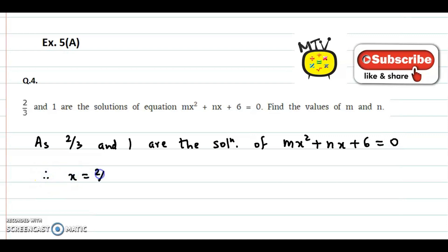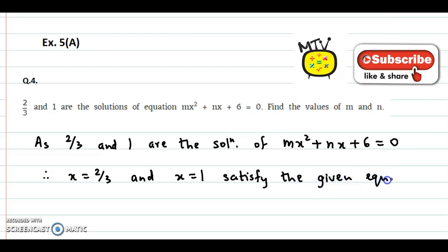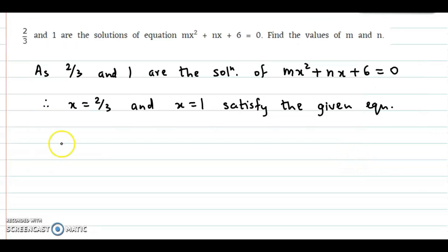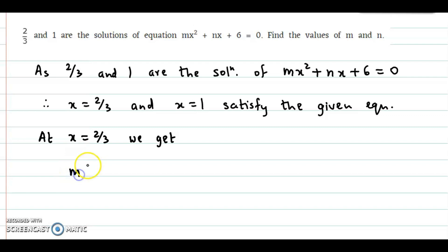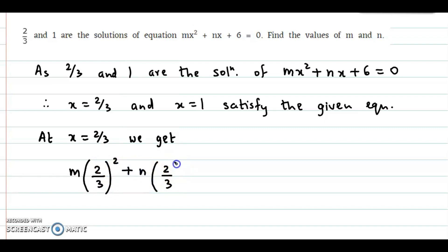x equal to 2 by 3 and x equal to 1 satisfy the given equation mx squared plus nx plus 6 equal to 0. Let us consider x equal to 2 by 3. At x equal to 2 by 3, we substitute into the equation: m times x squared, that is 2 by 3 the whole square, plus n into x, that is 2 by 3, plus 6 is equal to 0.